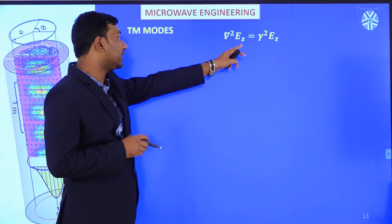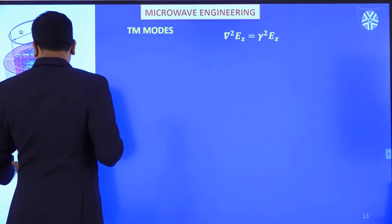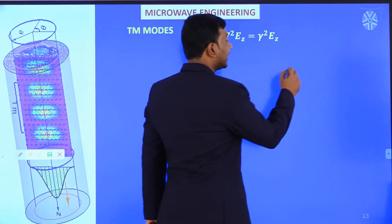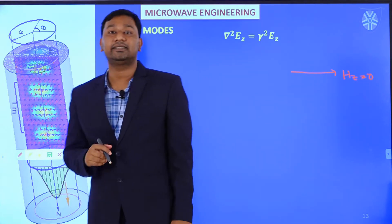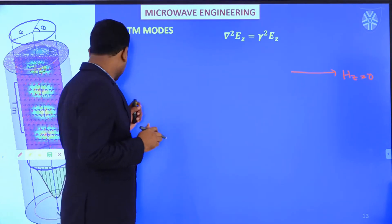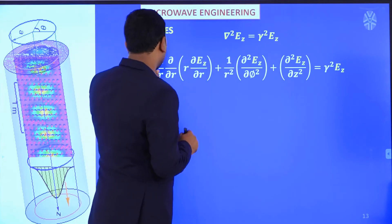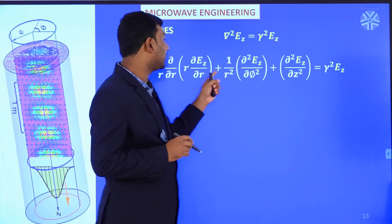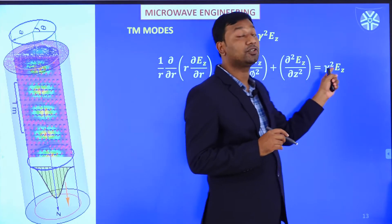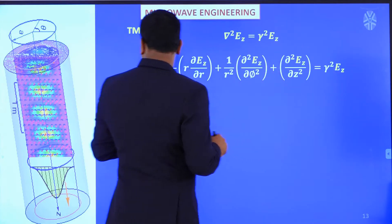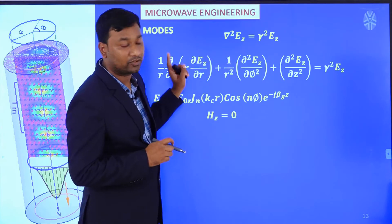In the transverse magnetic mode, the wave equation is del-squared Ez equal to gamma-squared Ez, because in the transverse magnetic mode the magnetic field component is zero in the z direction. Only the electric field component is present in the z direction. We write the cylindrical coordinate form of del-squared: (1/r)(∂/∂r)(r ∂Ez/∂r) + (1/r²)(∂²Ez/∂φ²) + ∂²Ez/∂z² = gamma-squared Ez, where gamma is the propagation constant.